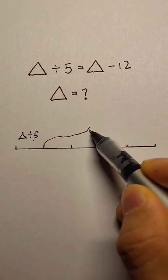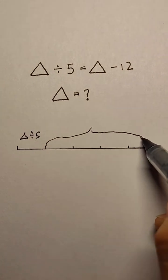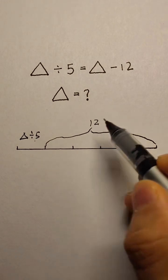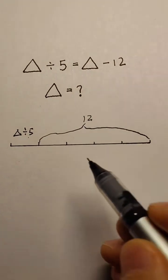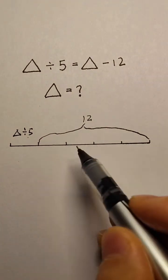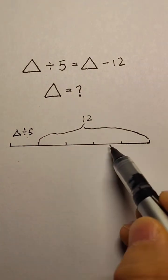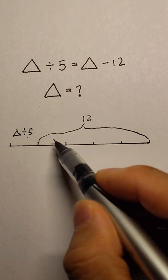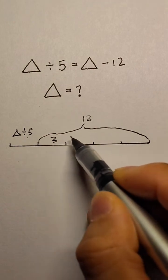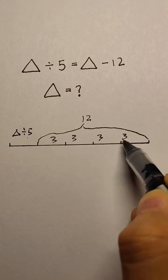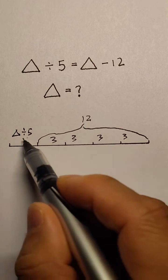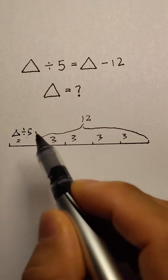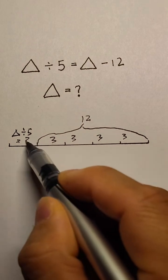So this left part is 12. Here we have 4 equal sections. Each section will be 3, so here the section will be 3.